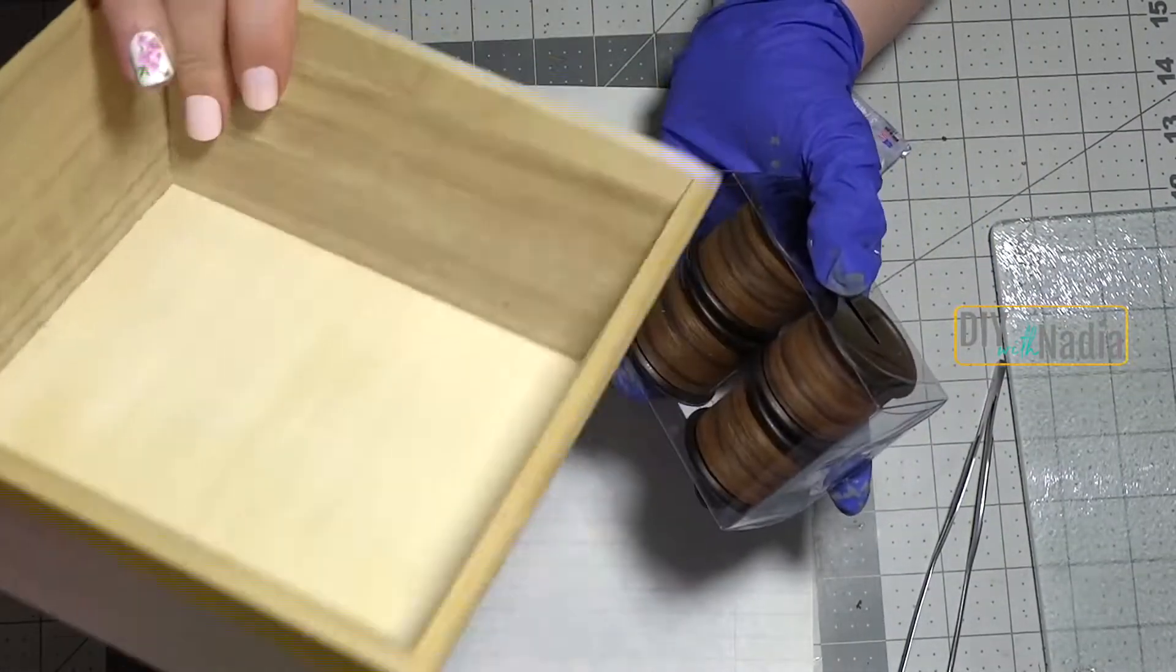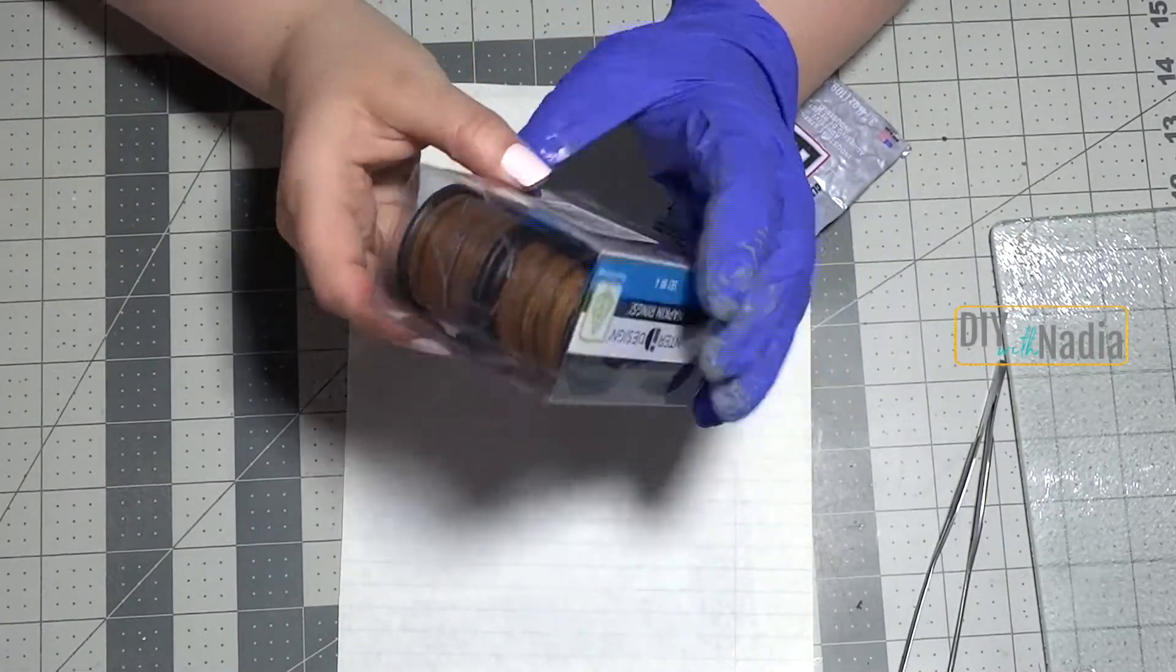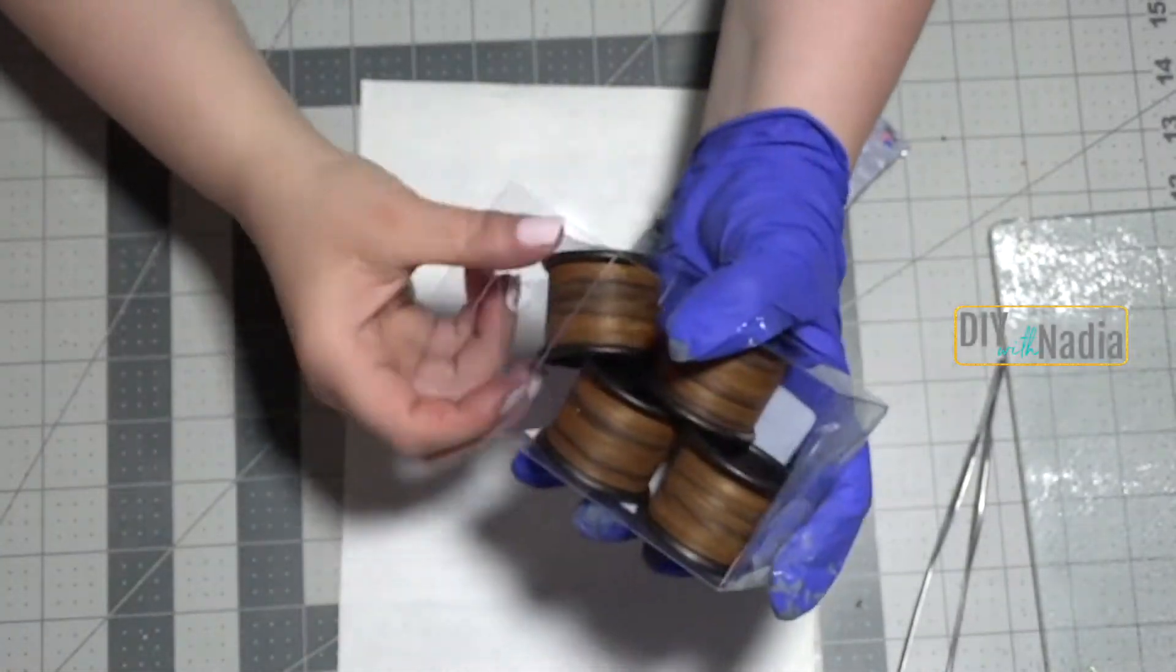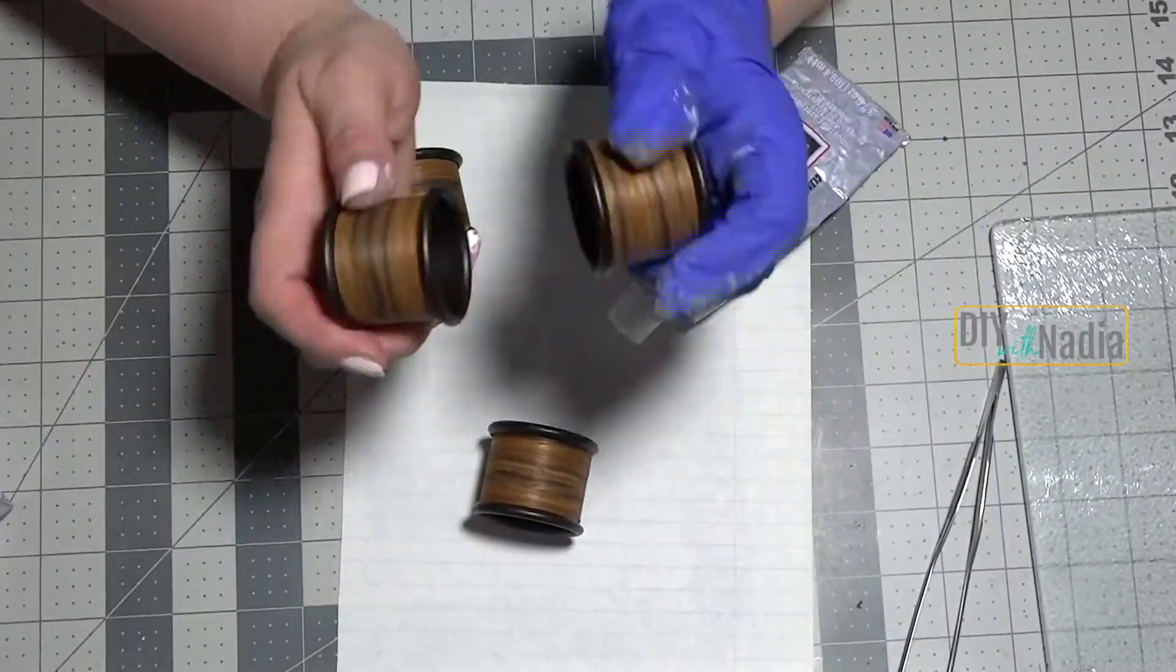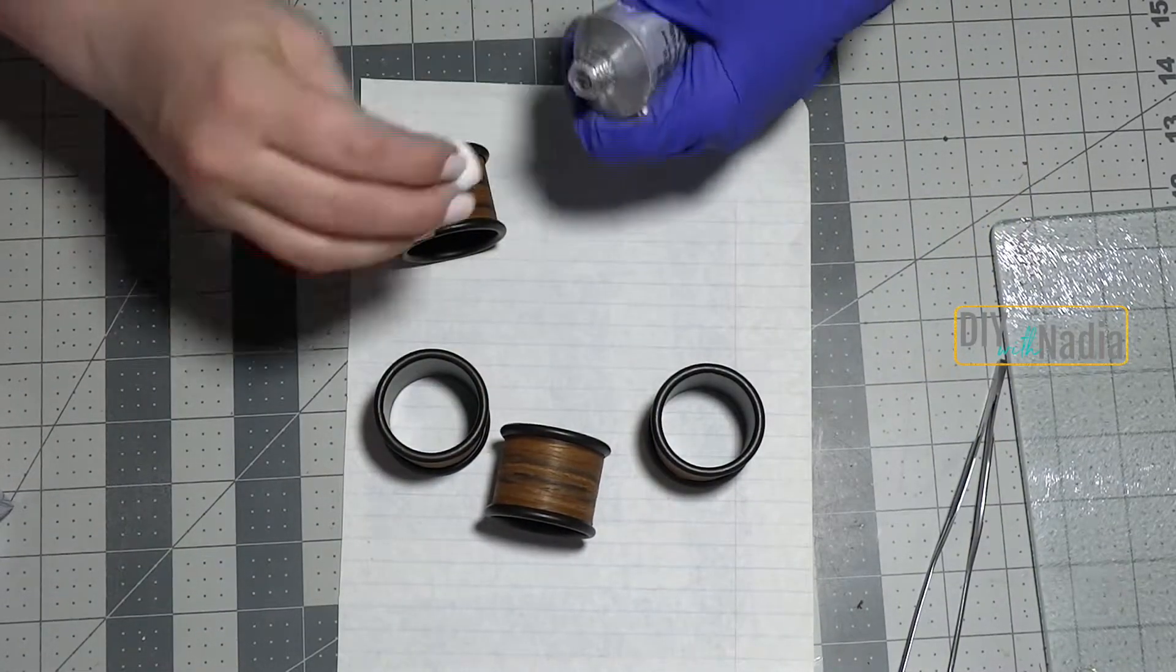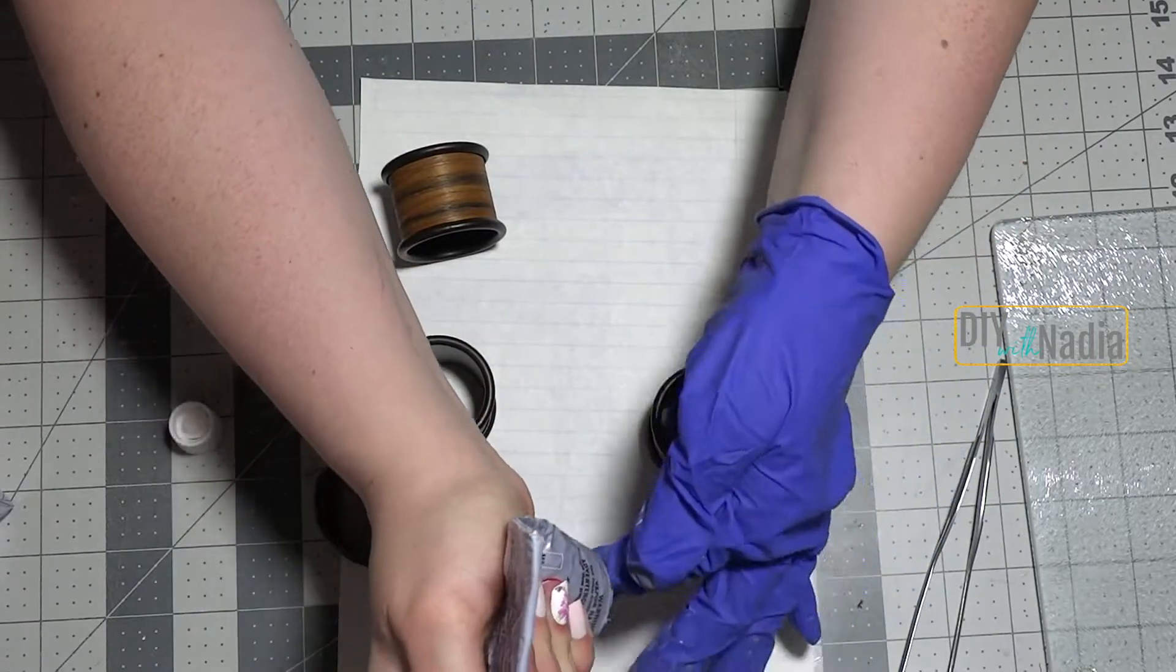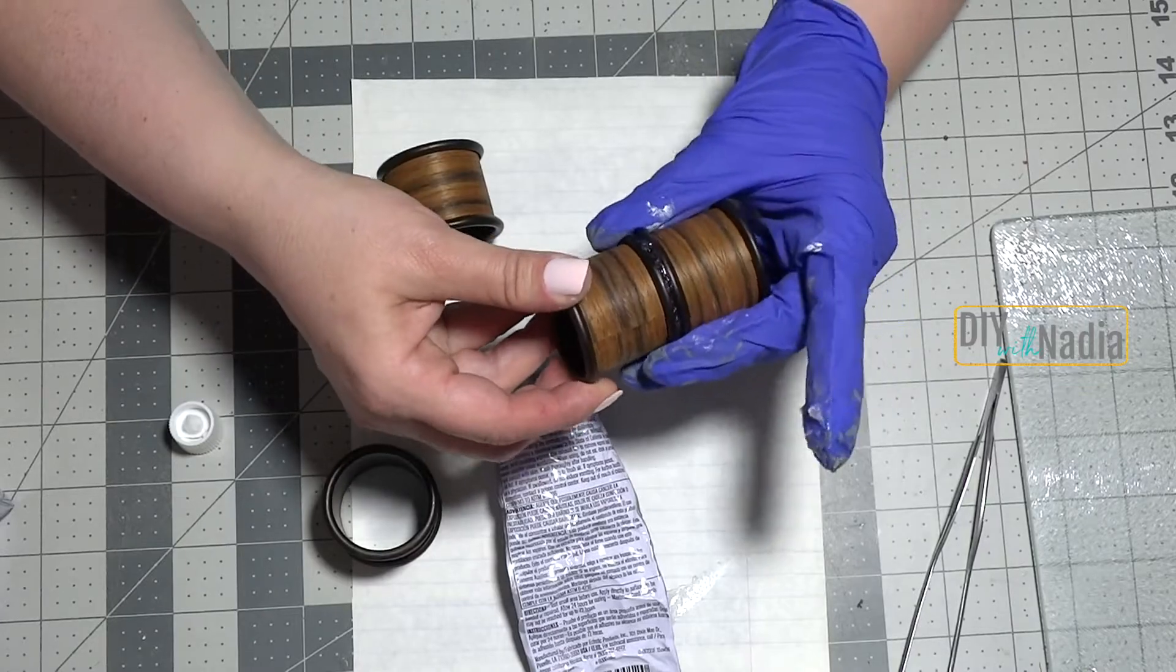For the leg between my little trays I will be using these napkin ring holders from the Dollar Tree. The really cool part is they are metal, like you can hear. They are going to be nice and strong. I will be just using my E6000 and I'm just going to stack them up and leave them overnight.